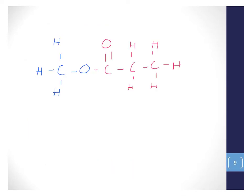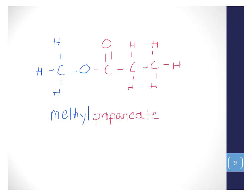Let's try another example. The first part of the name is the part of the chain just attached to the oxygen — we end that with 'yl'. One carbon is attached to the oxygen with no C double bond O, so it goes first and we call it methyl. The second part of the name is the chain that has the C double bond O — a three-carbon chain with C double bond O — so we call that propanoate. Our name is methylpropanoate.